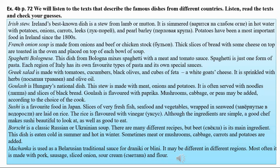Machanka is used as a Belarusian traditional sauce for draniki or blini. It may be different in different regions. Most often it is made with pork, sausage, sliced onion, sour cream, and flour.